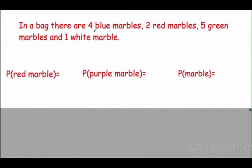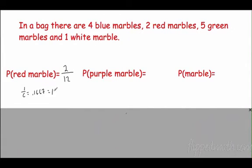We have a bag of marbles: four blue, two red, five green, and one white. The total is twelve marbles. What's the probability of picking a red marble? There are two red marbles out of twelve total, giving us two over twelve, which reduces to one over six — 0.1667, or 16.67%. What about picking a purple marble? There are none, so zero out of twelve — zero percent.